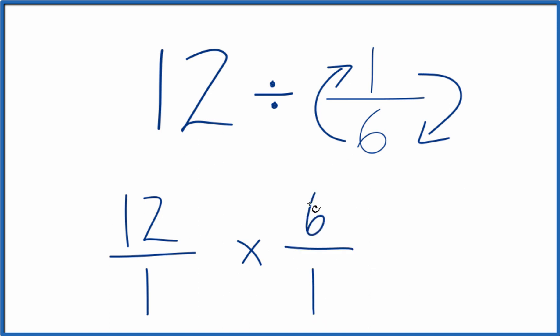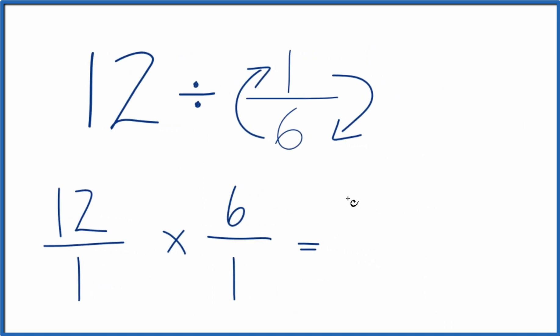So now when we're multiplying fractions, we multiply the numerators and then the denominators. 6 times 12 is 72. 1 times 1 is 1. And 72 divided by 1, that's just 72.